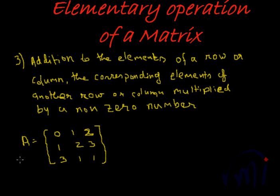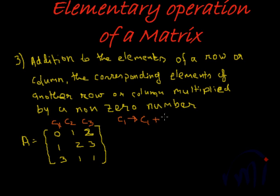What it means is, taking the same example matrix with columns c1, c2, c3 — if we replace c1 such that c1 becomes c1 plus 2 times c3, then the matrices remain equivalent.